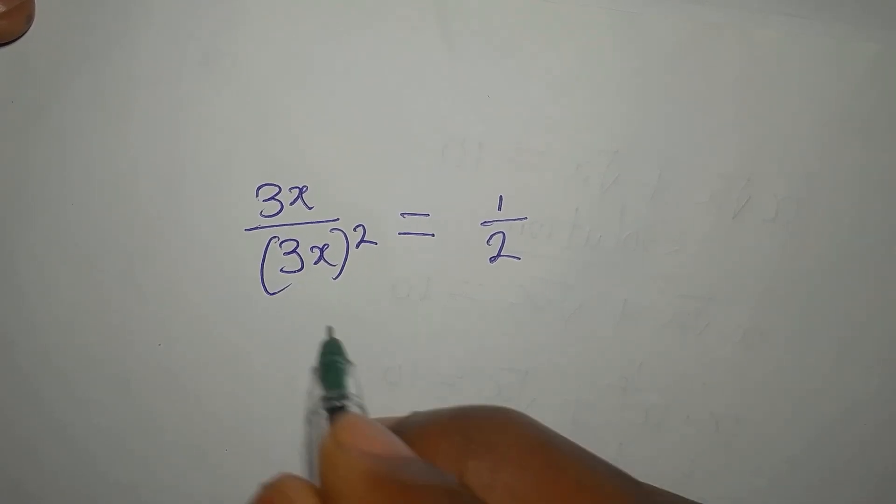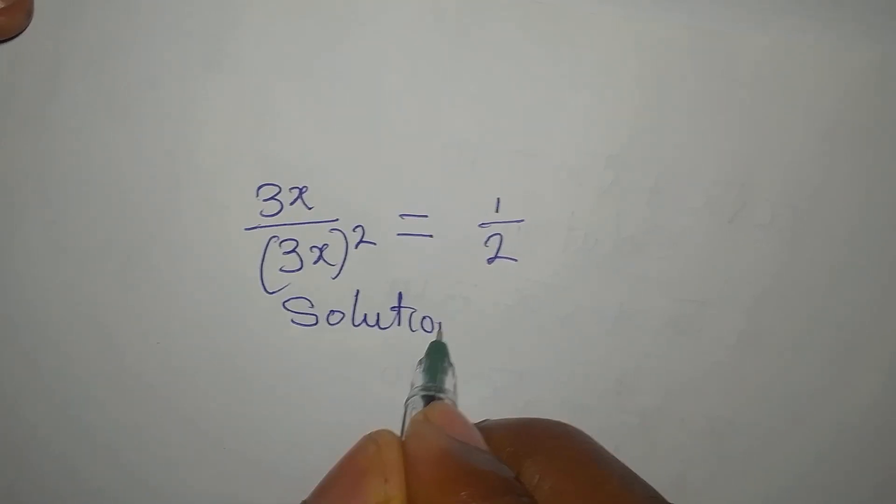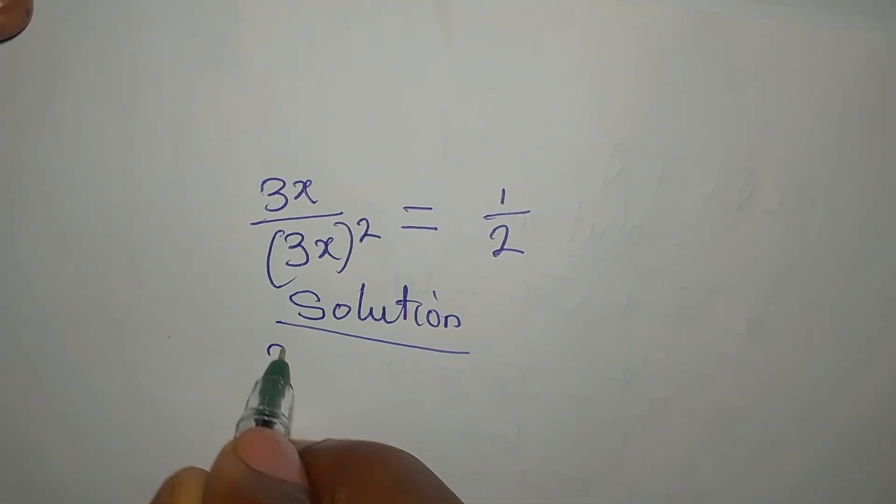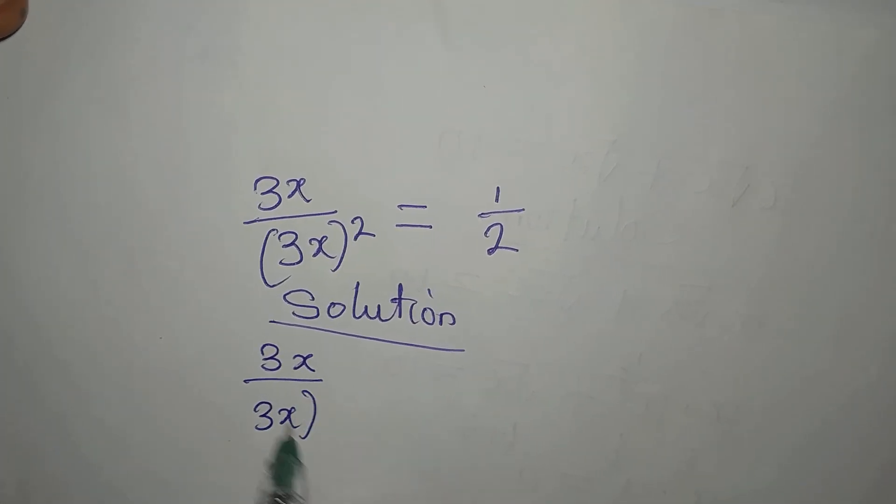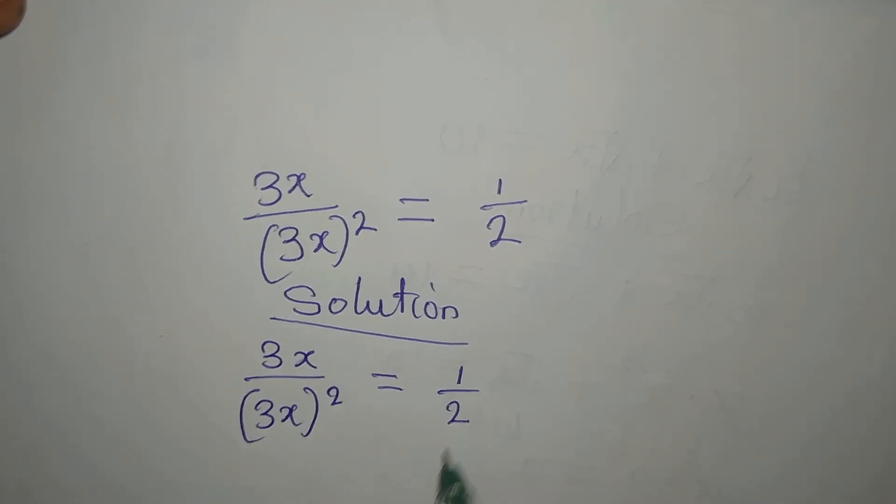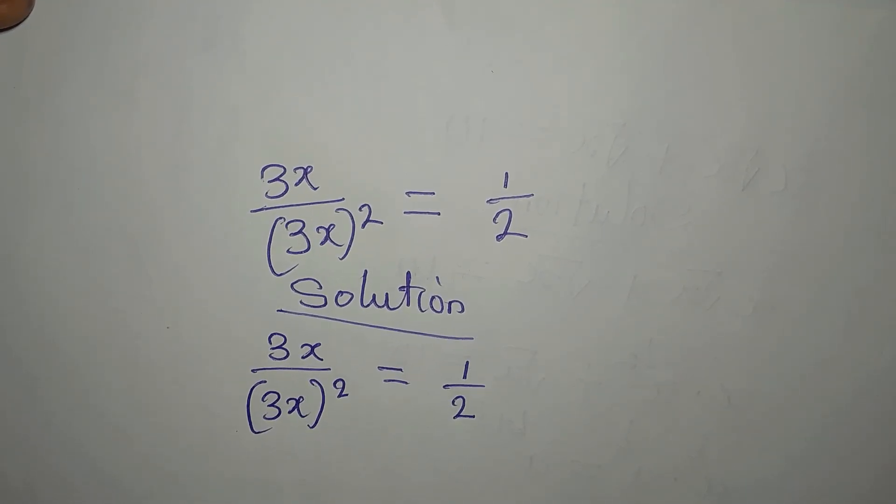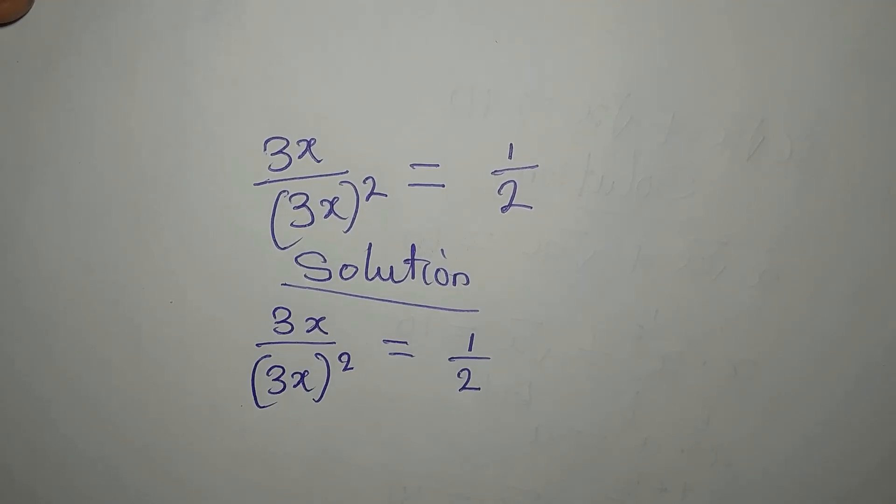Hello everyone, let's provide the solution to this. We have 3x over 3x to the power of 2 equals 1 over 2. The question is how do we provide the solution to this?